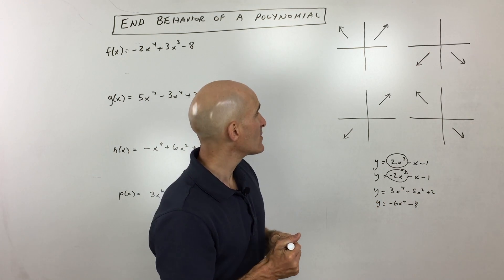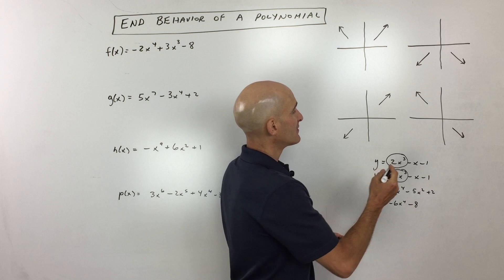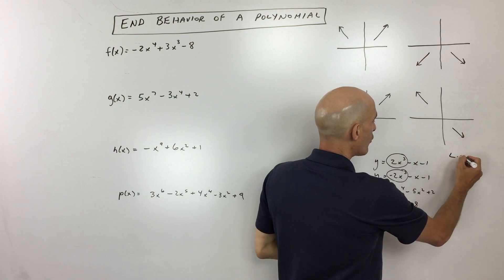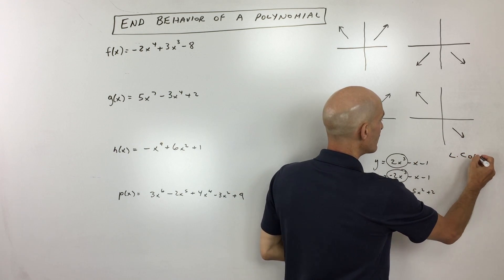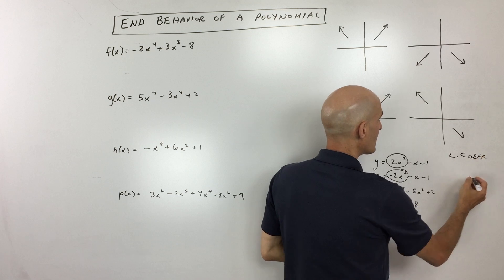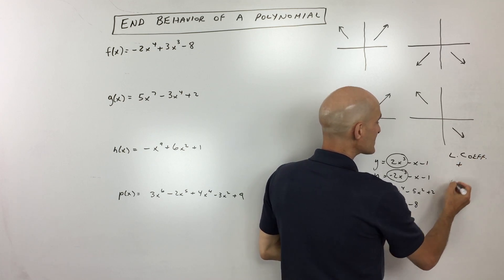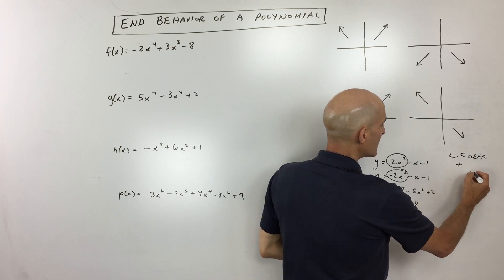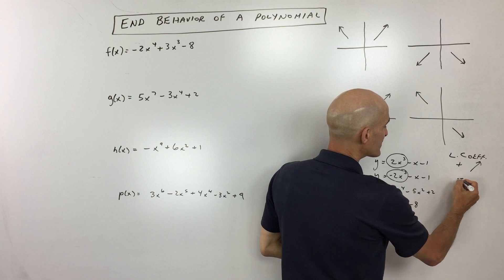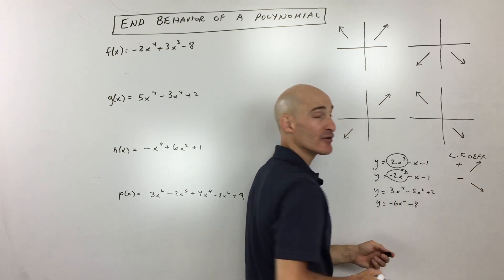What determines whether it's going up to the right or down to the right is the leading coefficient. If the leading coefficient is positive, then it's going to go up to the right. If it's negative, it's going to go down to the right.